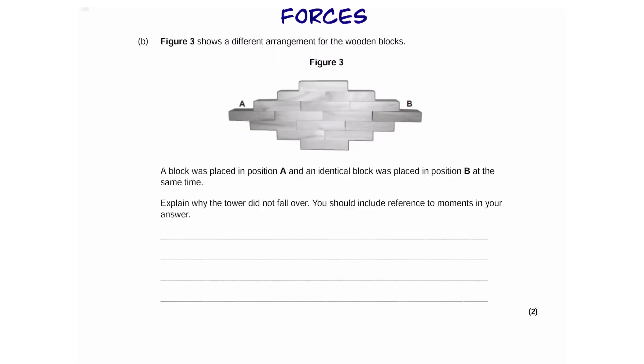Okay, next part. So, here we have two blocks, A and B, which have been placed in the same position on opposite sides of the block. The question says, explain why the tower does not fall over, and include references to moments in your answer. Now, moments is something in triple science. However, if you already got to this part of the video, you might as well watch the rest of it.